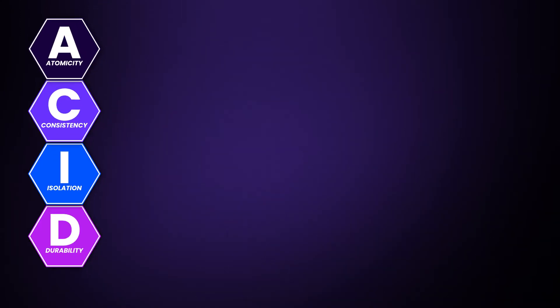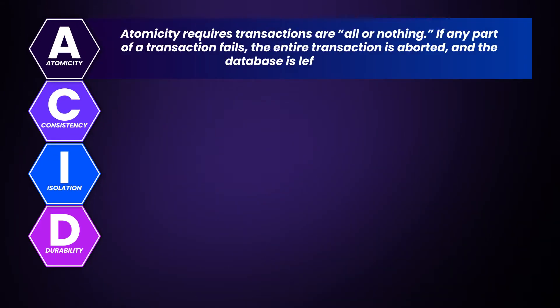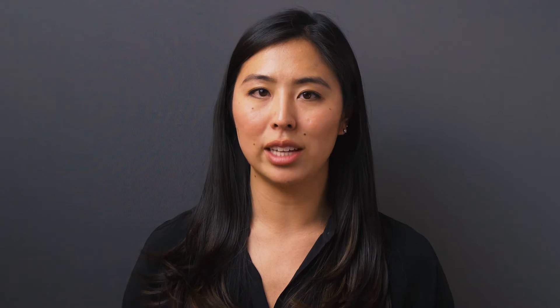Atomicity means transactions are all or nothing. If any part of a transaction fails, the entire transaction is aborted and the database is left unchanged. If a transaction succeeds, all mutations are applied together. SQL operations never see any partially written states from transactions.